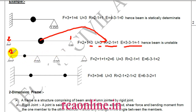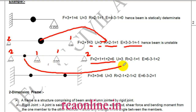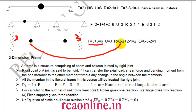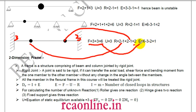Next problem: f equals 2+1+1+1+2 equals 6, with one internal hinge joining two members giving r equals 1, u equals 3, so E equals 2. Another problem: fixed support gives f equals 6. Two internal hinges each joining two members give r equals 1+1 equals 2. So E equals 6 minus 3 minus 2 equals 1.